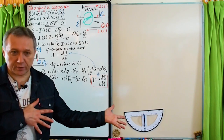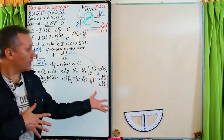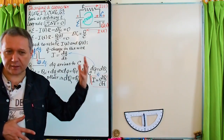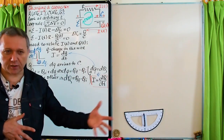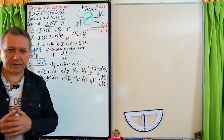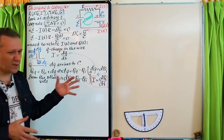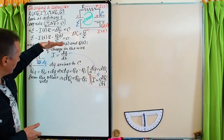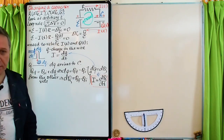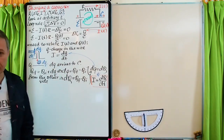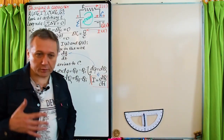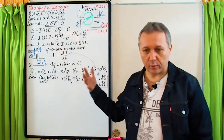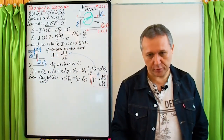Books usually explain the minus for the discharging case by saying that current increases at the expense of the charge in the capacitor. I developed these speculations in order to get those plus and minus signs naturally from simple logic.